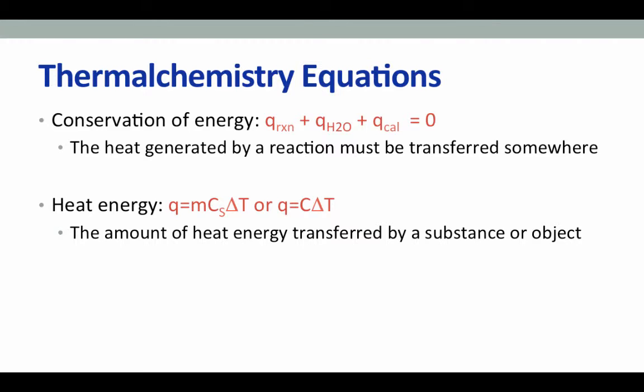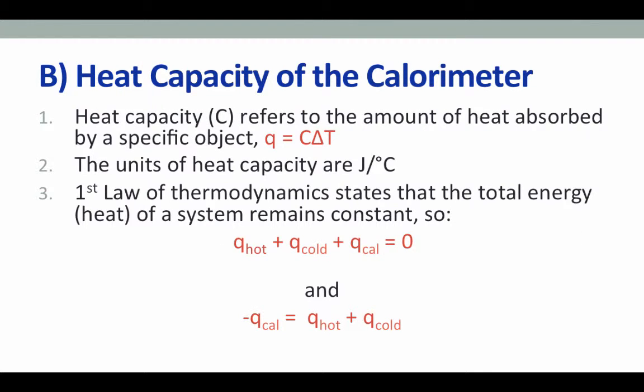For each expression, it is important to note the final and initial temperature of each participant in the reaction. The initial temperature of a calorimeter can be assumed to be room temperature, and the temperature of all other solutions should be measured using a thermometer. Once you have assembled your calorimeter according to part A in your lab manual, it is time to determine the heat capacity of your calorimeter. Using the conservation of energy equation, the heat expressions for part B are: heat of hot water plus heat of cold water plus heat of the calorimeter equals zero.